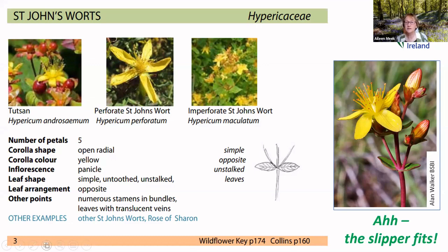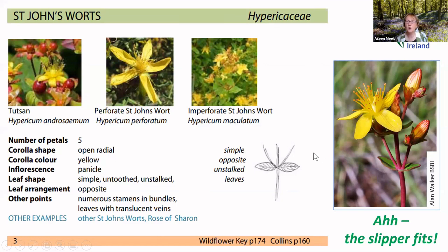It looks like the slipper fits, and we are pointed in the direction of where to look up our flower guide. I also want to point out that if you don't have either of the two recommended guides, you simply look up the family name — in English or Latin — in your index, go to that page, and either use the key or browse that family's section to look through the species and find the correct one.